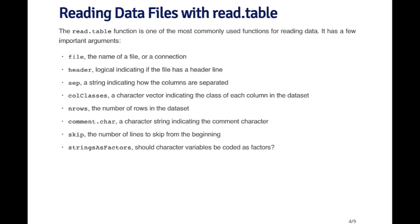The read.table function is the most commonly used function for reading data into R. It's important to understand how the arguments work. The first argument is the name of a file or a connection — usually a string with a path to a file on your computer. The header argument is a logical flag indicating whether the first line is a header line containing variable names, or whether the first line contains data directly. The sep argument stands for separator — a string indicating how the columns are separated, such as commas, semicolons, tabs, or spaces.